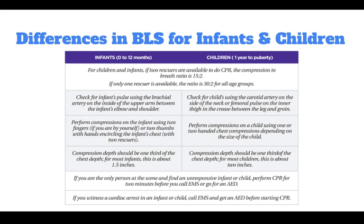For children, which are one year to puberty — you can distinguish puberty by looking for breast development in females and armpit hair in males — check for the pulse using the carotid artery on the side of the neck or femoral pulse on the inner thigh in the crease between the leg and groin. Perform compressions using one or two hands depending on the size of the child. Compression depth should be at least one-third the chest — for children, this is about 2 inches.